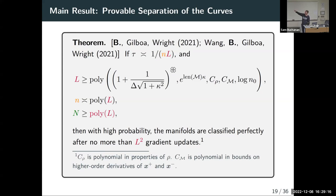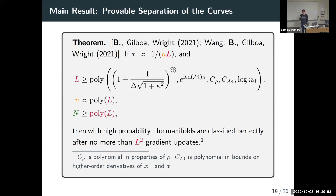Regarding the density rho: in the analysis, we assume it's bounded below by a positive constant. The measure mu we get samples from admits a density with respect to the natural measure on the manifold. We don't focus too much on the statistical aspects — we assume there's a positive constant bounding the minimum probability, and we sample enough to see everything. This at least avoids assuming a uniform density over the curve. The len(M) term is the sum of the lengths of the two curves — a volume parameter for the manifolds.